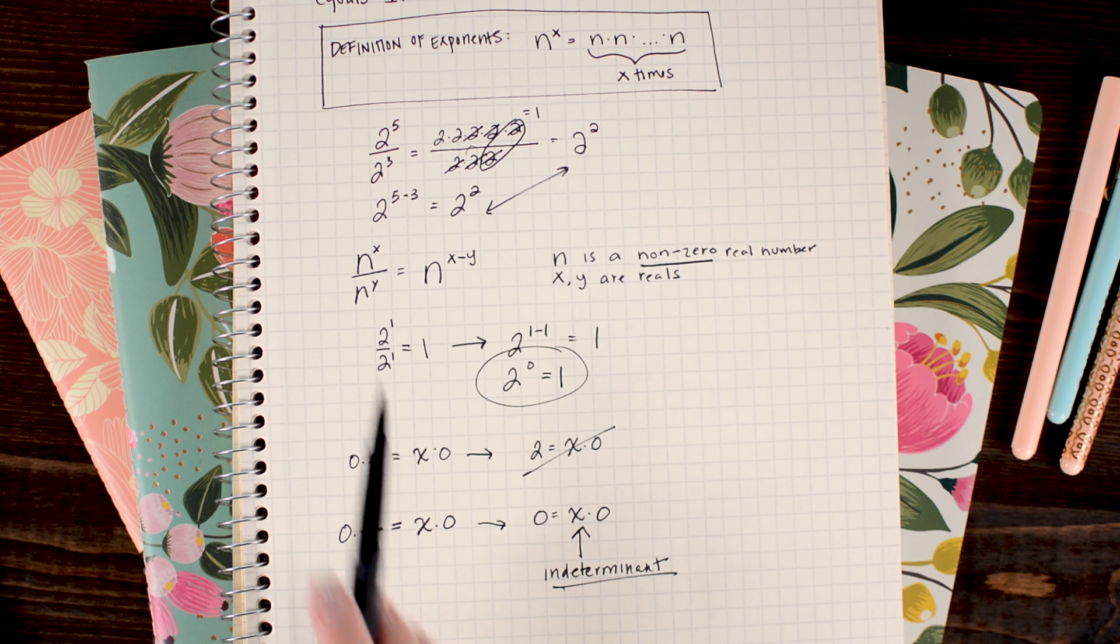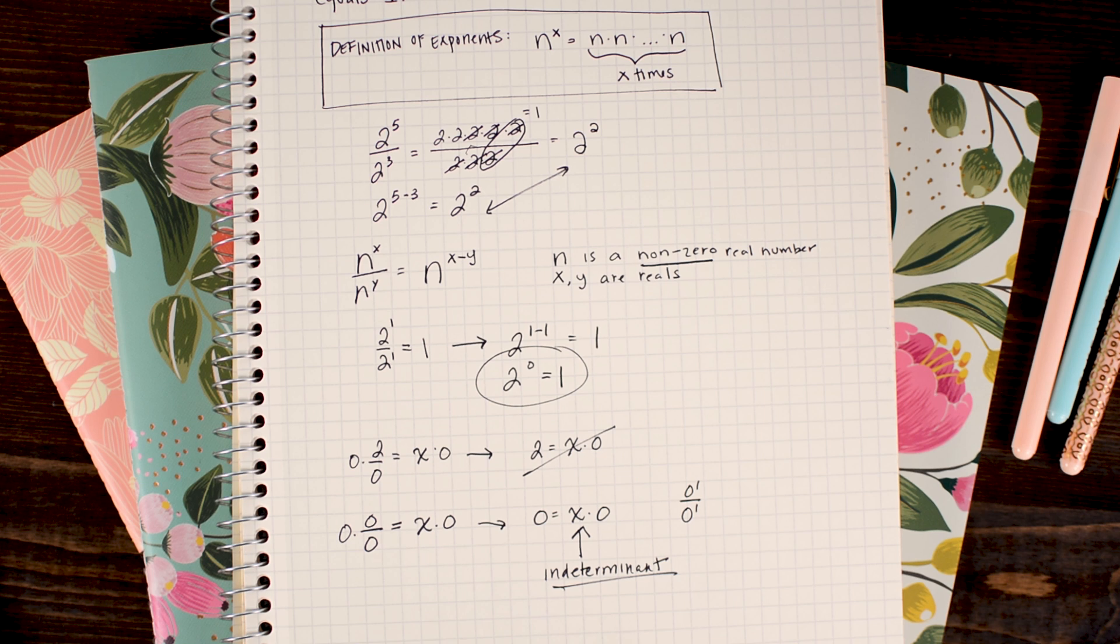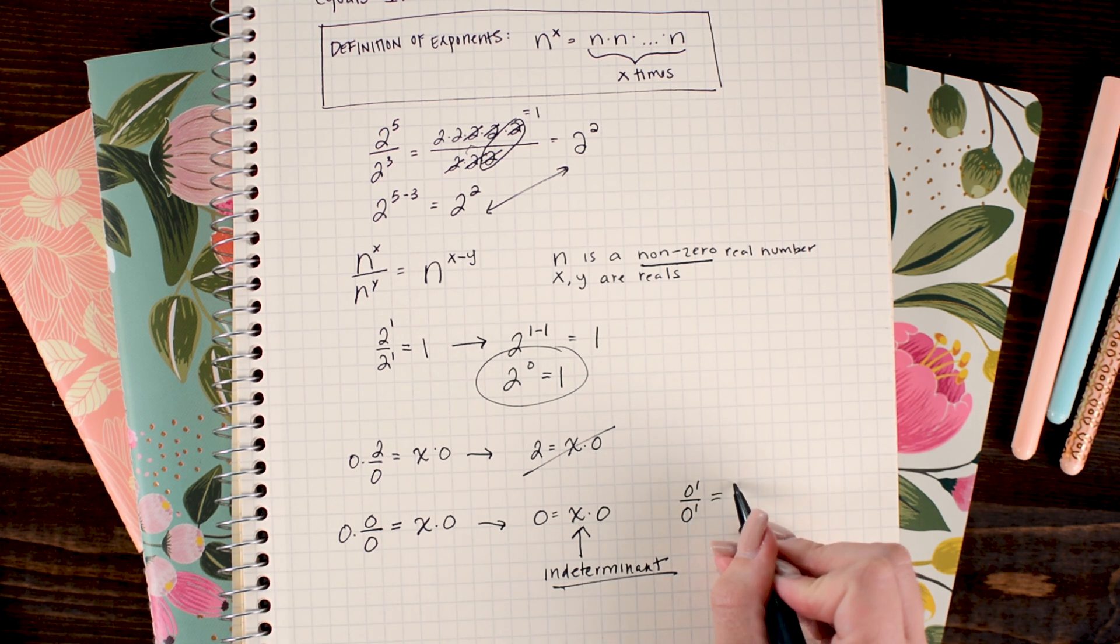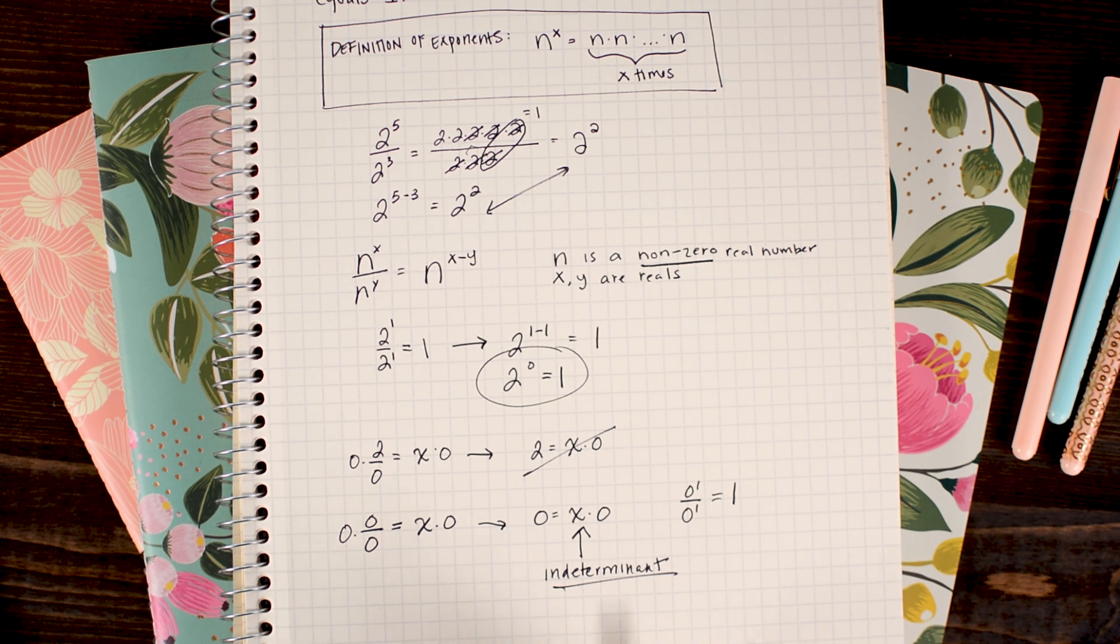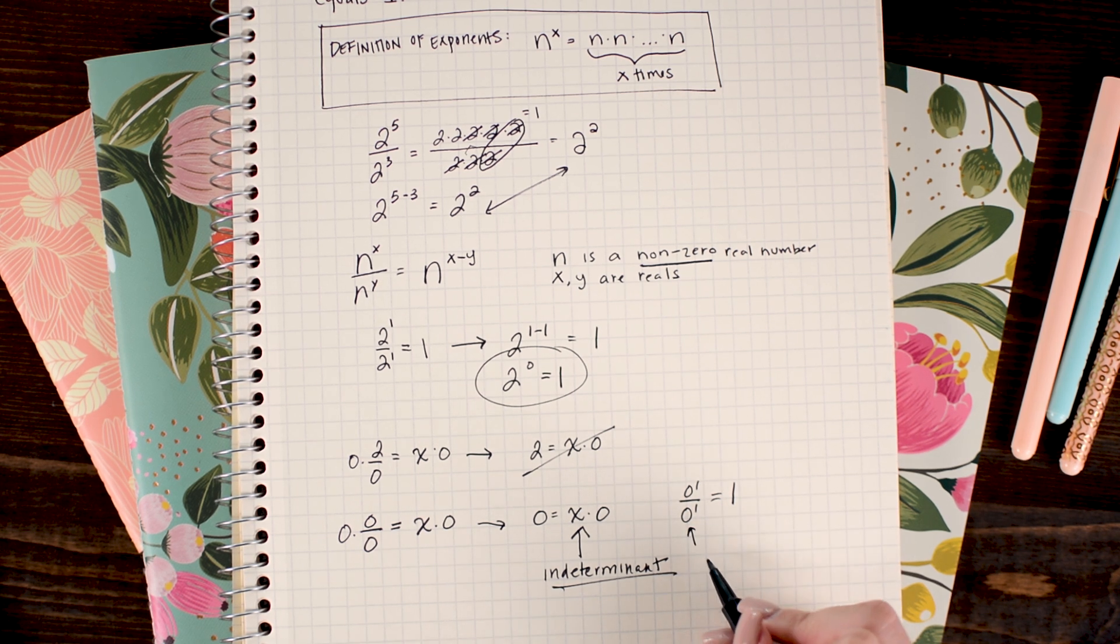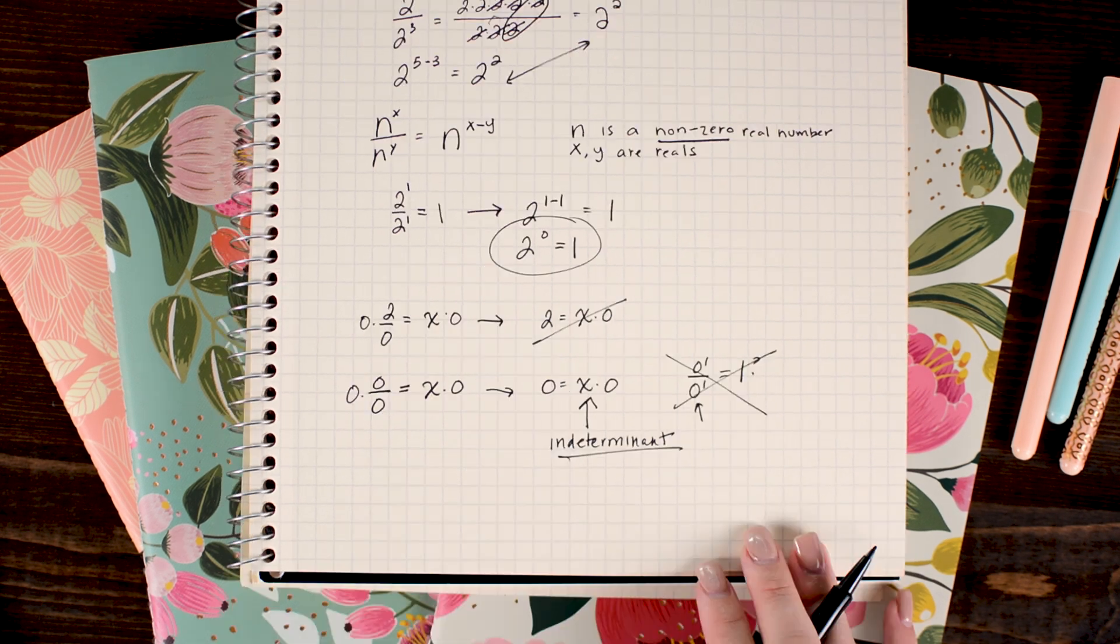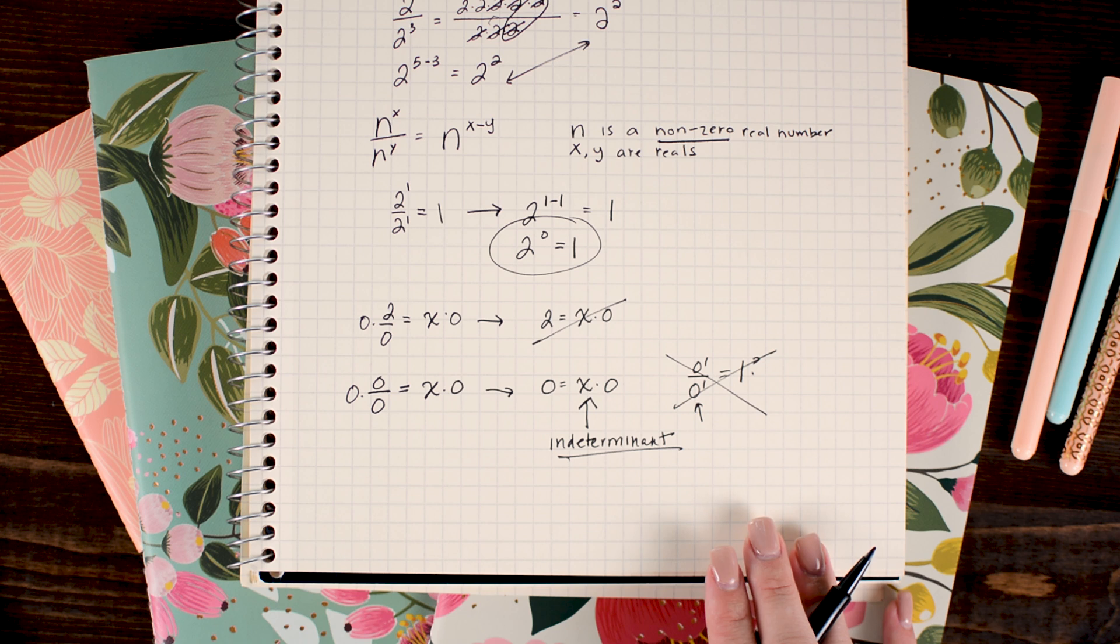So now we can't really go through this same process. If I put 0 to the first power over 0 to the first power and set it equal to 1, automatically I have this issue here where this is indeterminate. And so I automatically break because this is not equal to 1.